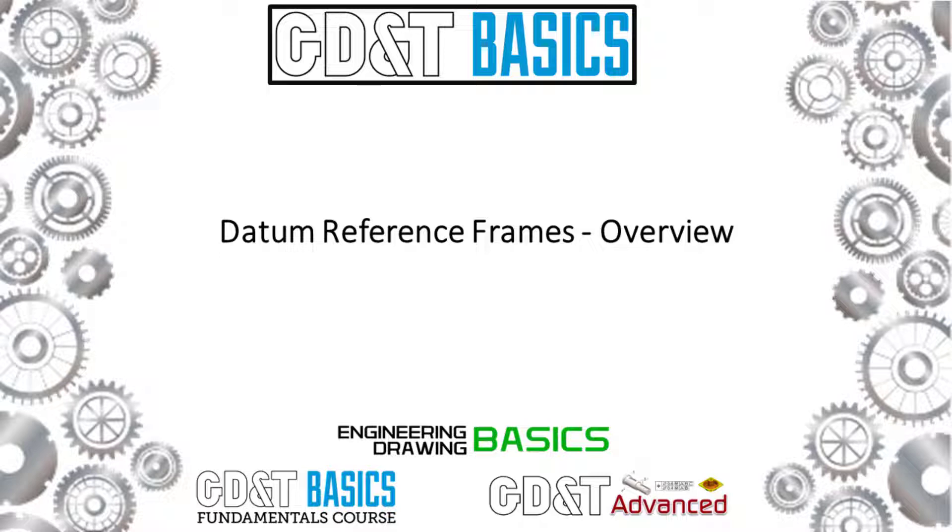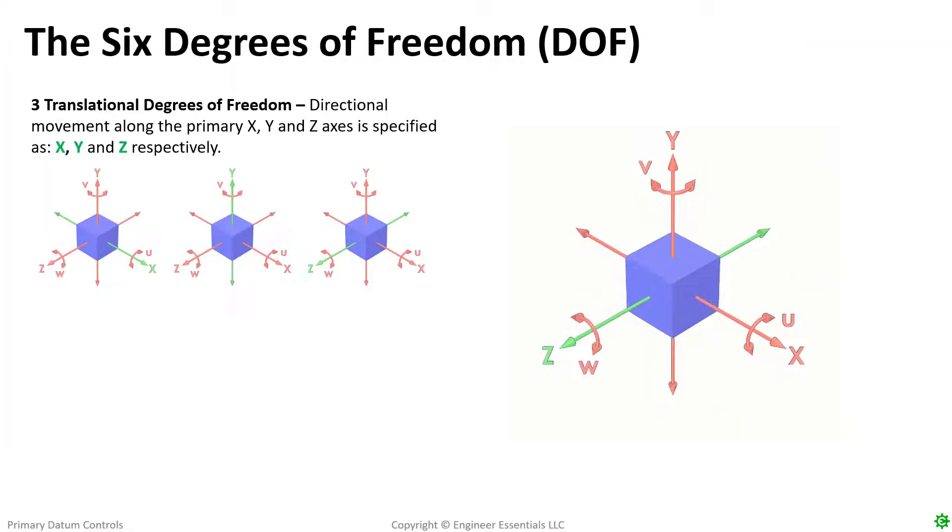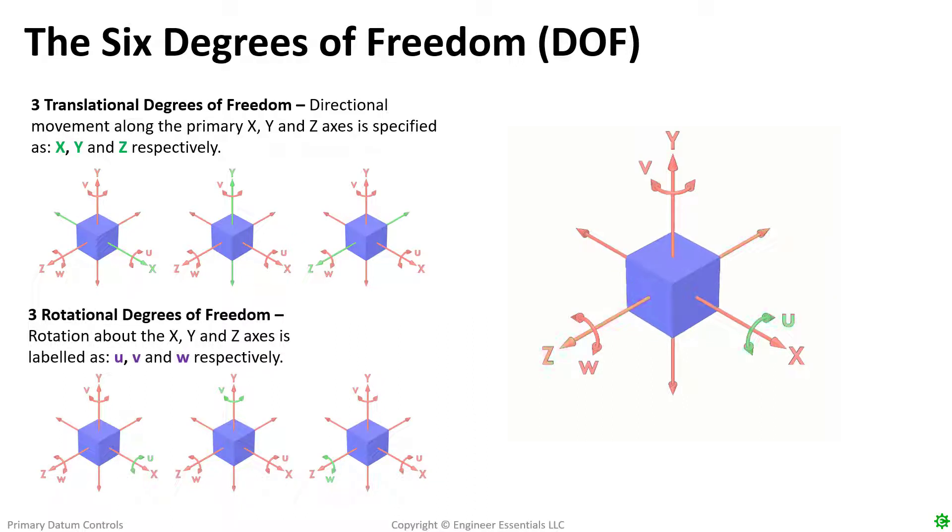Datum reference frames are especially important to GD&T because they set up a framework that all other features and their geometric controls can reference from. Without this framework our tolerance zones would lose all meaning. The framework we reference from will have to lock down all the degrees of freedom that are necessary for the given part. Generally this means all six degrees of freedom will need to be controlled.